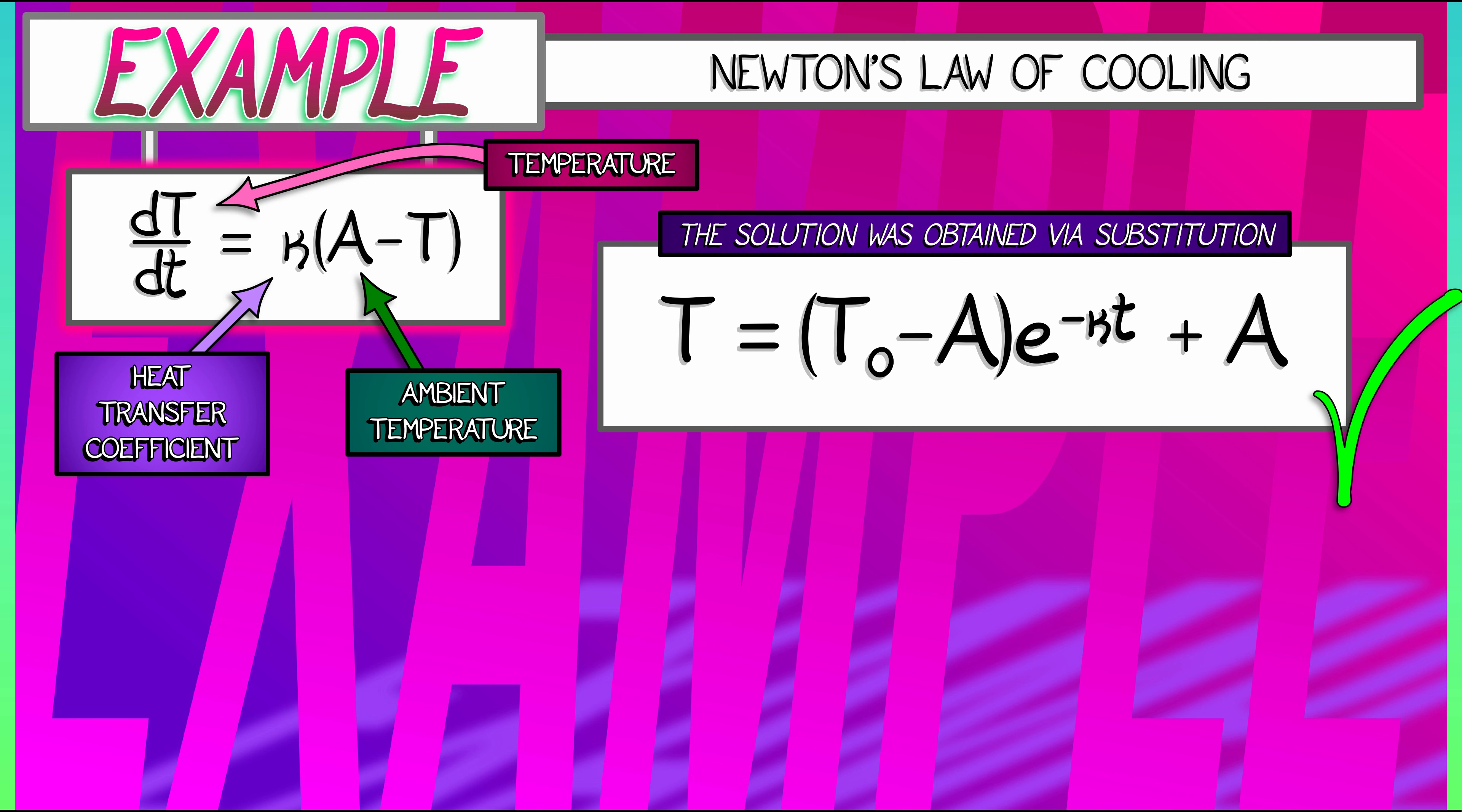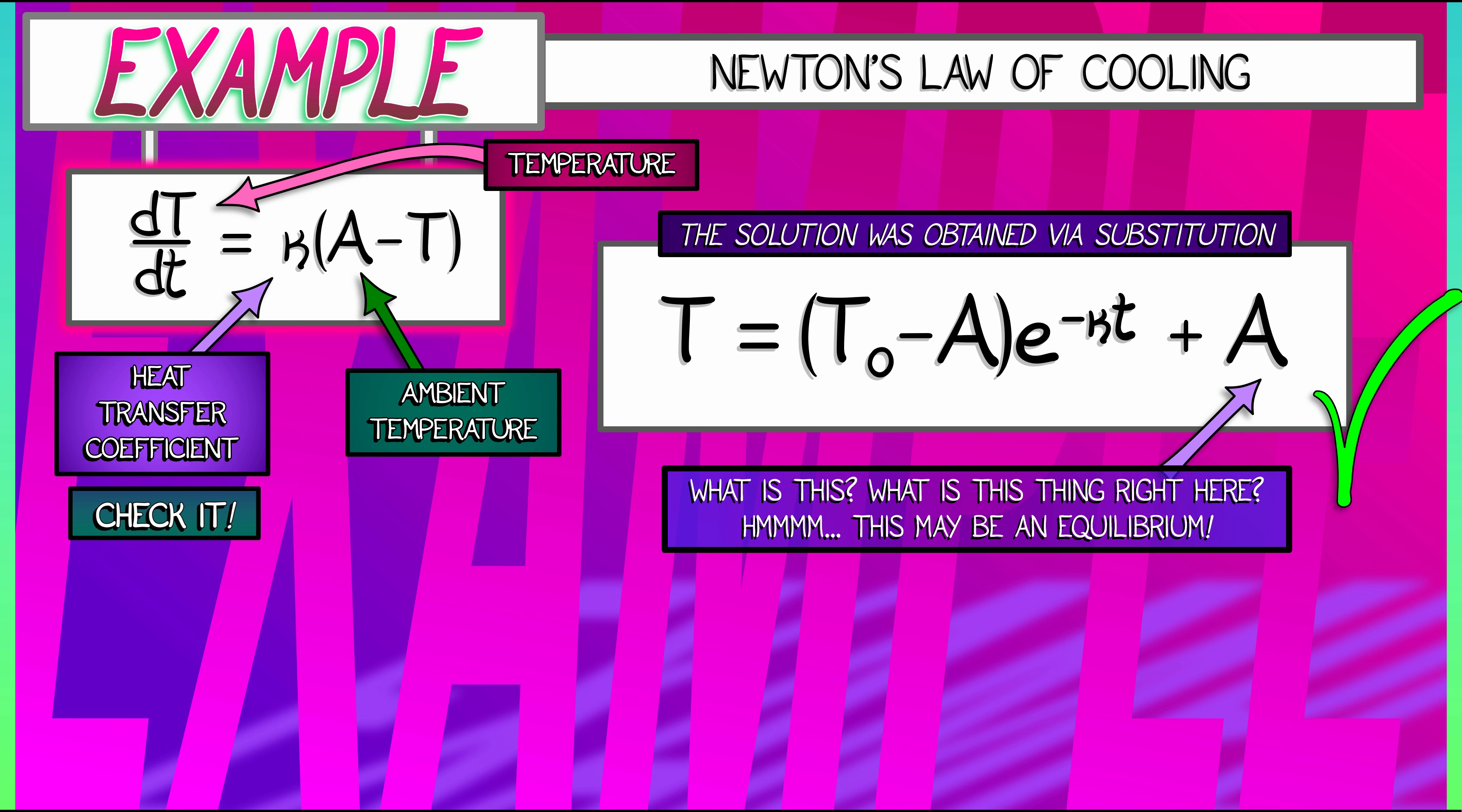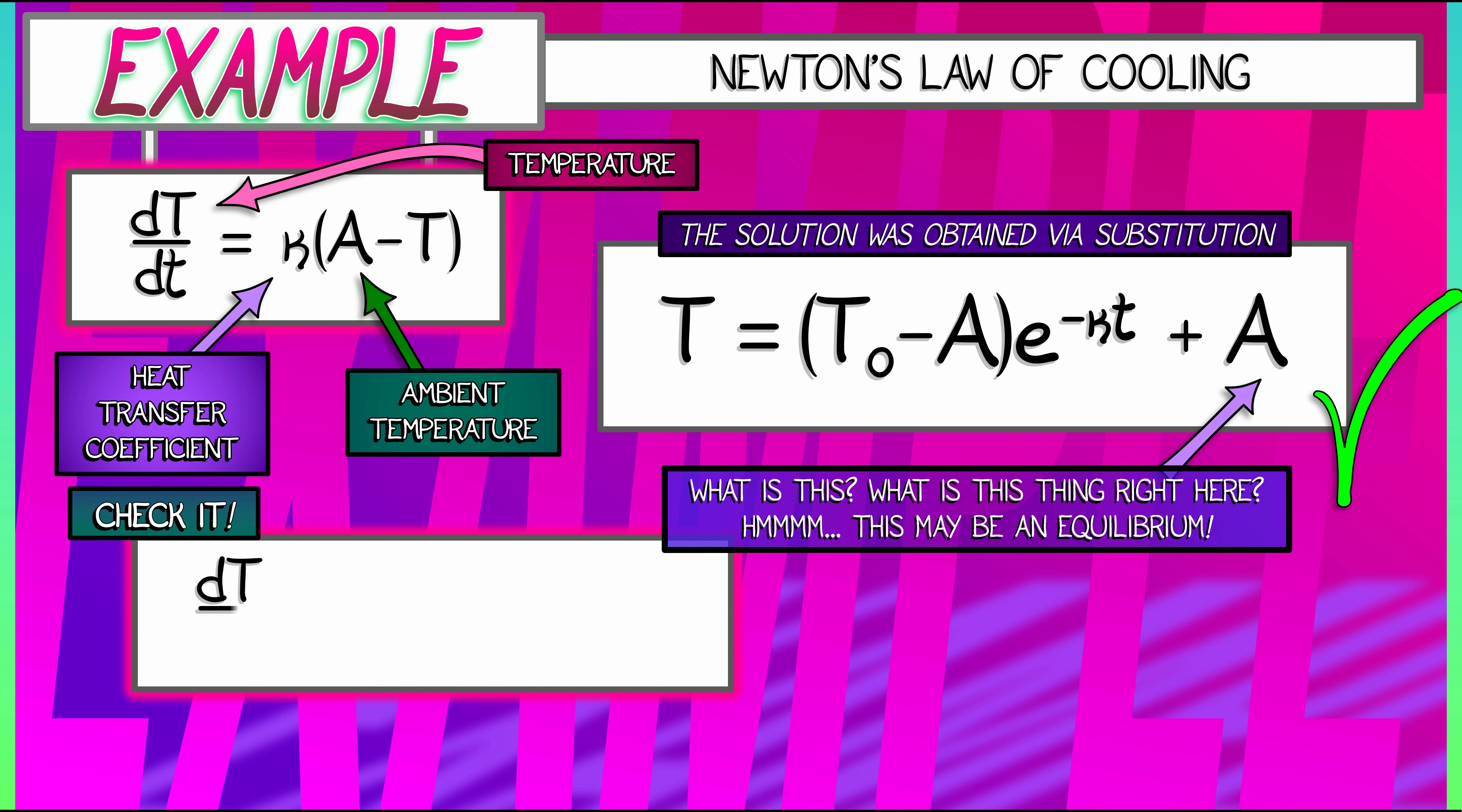what we've done, it sure seems as though this solution A—that is an equilibrium—might be a stable equilibrium. Let's check: Is A a solution to the differential equation? Let's take the derivative and evaluate at A. We're taking κ times (A - T), substituting in T = A.